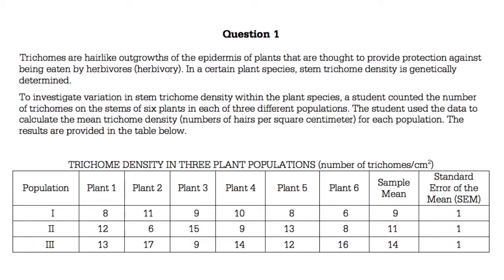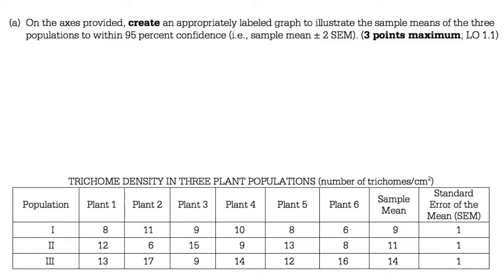This description is kind of long so I'm going to set aside a little bit of time to read through it. Question A: On the axes provided, create an appropriately labeled graph to illustrate the sample means of three populations to within 95% confidence.